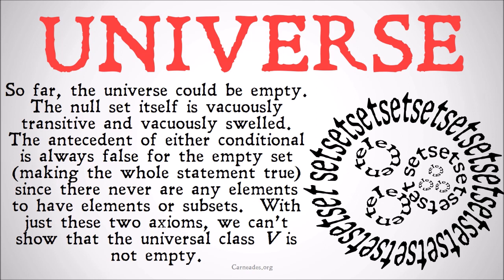Because there are no elements in the null set, vacuously all of the elements of the elements of the null set are also elements of the null set, because there are no elements to begin with. And similarly, vacuously, since there are no elements of the null set, there are no subclasses of the elements of the null set to be members of the null set. So it's super complete.